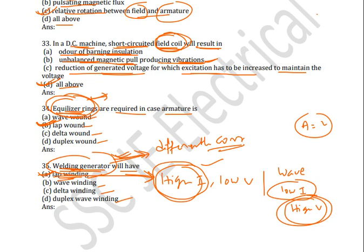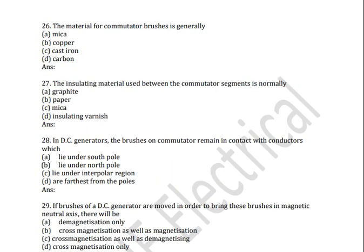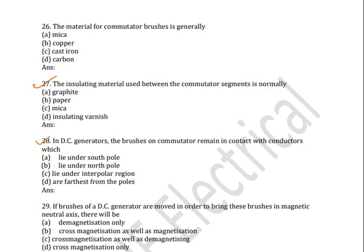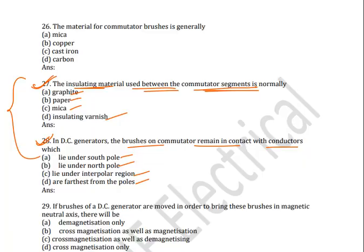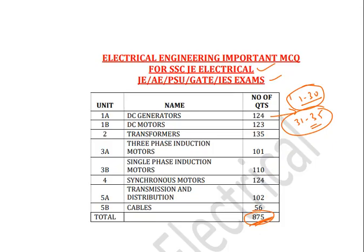These are today's five questions. Regarding previous questions, I will ask two questions — question 27 and 28 — just answer in comments. The insulating material used between commutator segments is normally: graphite, paper, mica, or insulating varnish? And: in a DC generator, the brushes on the commutator remain in contact with conductors which lie under south pole, north pole, inter-polar region, or further from the poles? Answer in comments. Thanks for watching — please like, share, and subscribe for more videos.